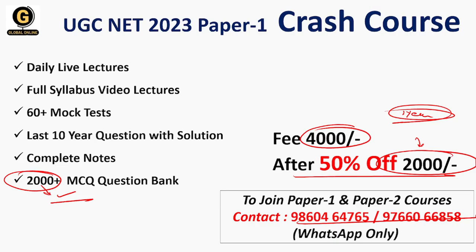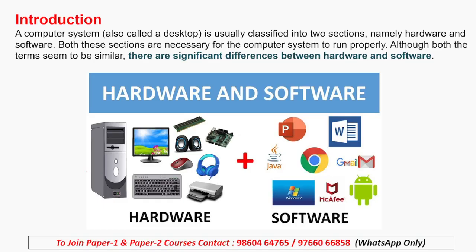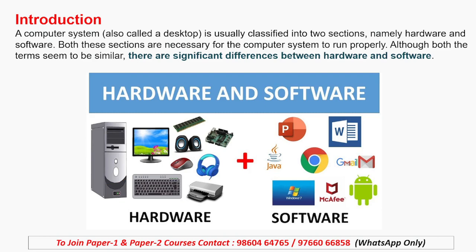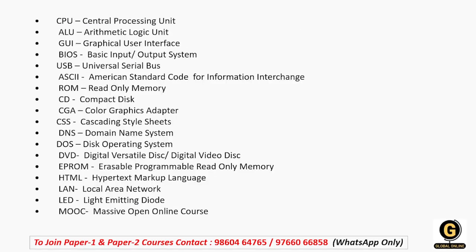Next है hardware और software। Hardware वो चीजें होती हैं जिनको हम easily touch कर सकते हैं। Software वो चीजें होती हैं जो mobile के अंदर होती हैं — जैसे WhatsApp, Facebook — ये सारे applications software होते हैं। Hardware होता है mobile, mobile की battery, mobile का charger। Computer के case में hardware और software की पूरी list यहाँ रखी है। कुछ important general abbreviations: CPU — Central Processing Unit, ALU — Arithmetic Logical Unit। इस slide को अच्छे से देख लीजिए और याद रख लीजिए।